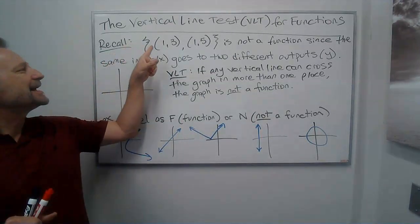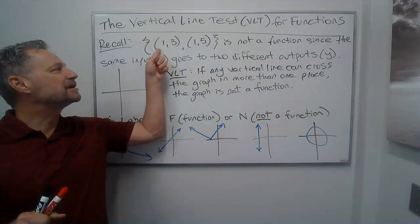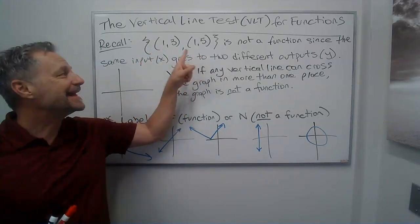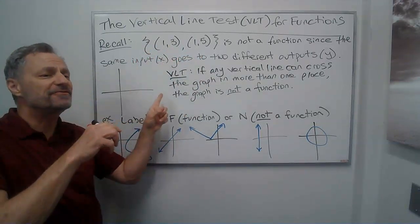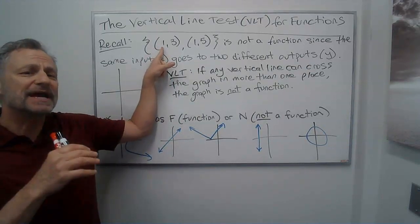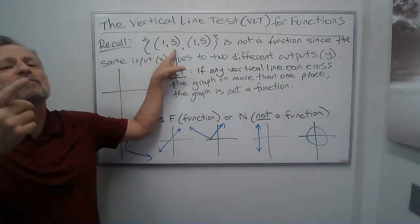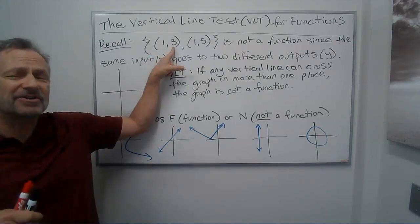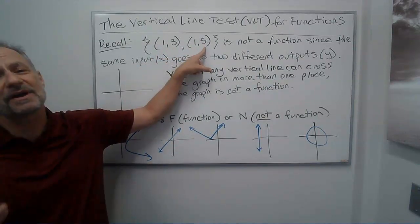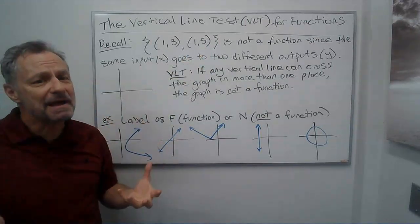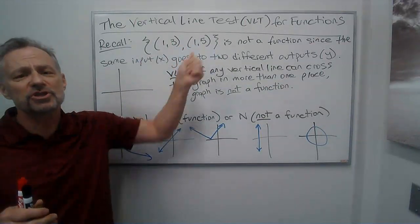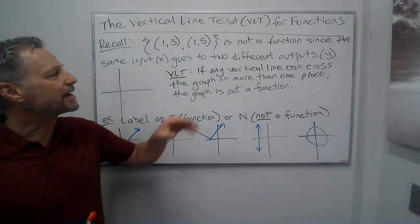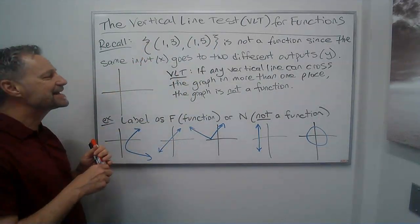Remember, if I have a set with the points (1,3) and (1,5), that's not a function. To be a function, any input or x value can only have one unique output or y value. Well, 1 has the y value of 3 and also the y value of 5, so it can't be a function. One goes to two different places.